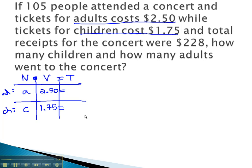To calculate the total value in the adults, we multiply A times 250, giving us 2.5A, and we multiply the children by 1.75 or 1.75C.